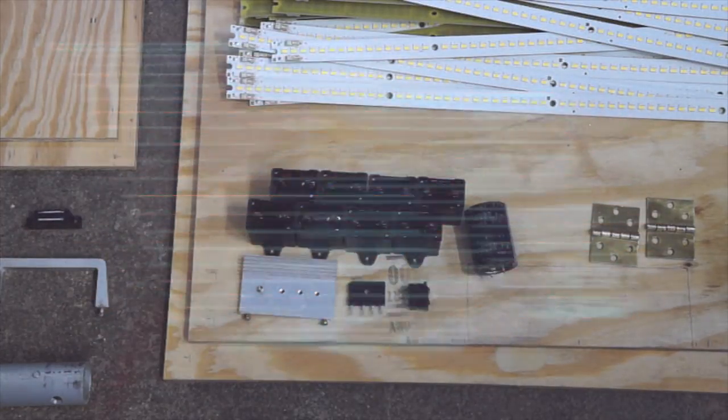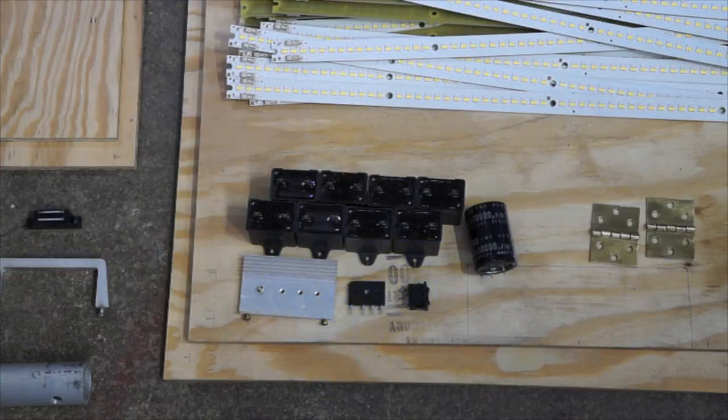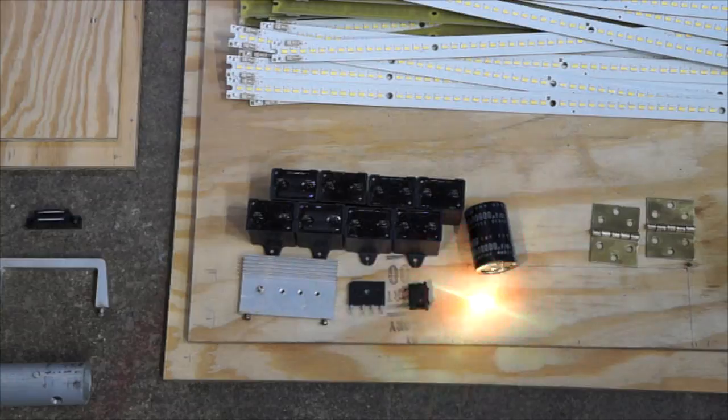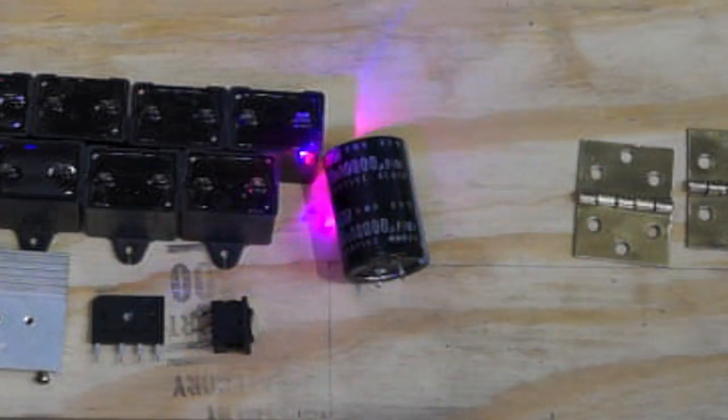The LEDs run off DC, so to convert AC from the wall outlet into DC, we'll use a full wave bridge rectifier like this one, which can handle at least 5 amps at 120 volts AC. And a suitable heatsink to keep the rectifier cool. An electrolytic smoothing capacitor will help eliminate flickering. I chose a 10,000 microfarad 80 volt DC capacitor.